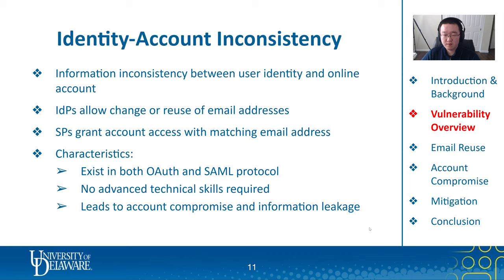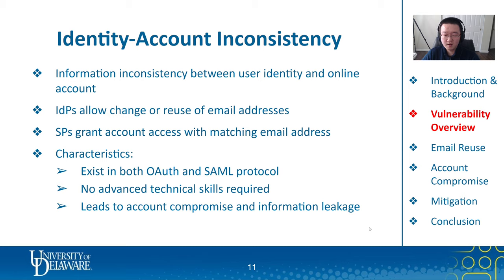So to summarize, the root cause of such a security threat is that the information contained in user identity and online account are inconsistent. Hence, we call it the identity account inconsistency threat. Information changes on the identity provider's side, especially the change or reuse of email address, are not reflected on the service provider's system. Service providers grant users access to accounts based on modifiable or reusable information. This inconsistency threat can be found in IDPs and SPs adopting both OAuth and SAML protocols. It does not require attackers to have advanced technical skills in order to compromise other people's accounts by exploiting this threat.